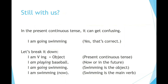Still with us? In the present continuous tense, it can get confusing. 'I am going swimming' — yes, that's correct. Let's break it down. 'I am' + verb-ing + object = present continuous tense. 'I am playing baseball' — now or in the future. 'I am going swimming' — here swimming is the object. 'I am swimming now' — in this case, swimming is the main verb.